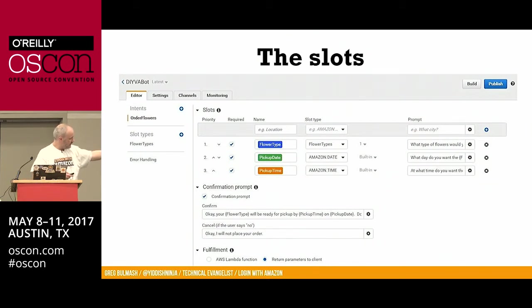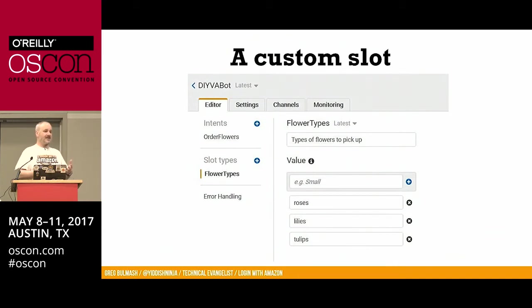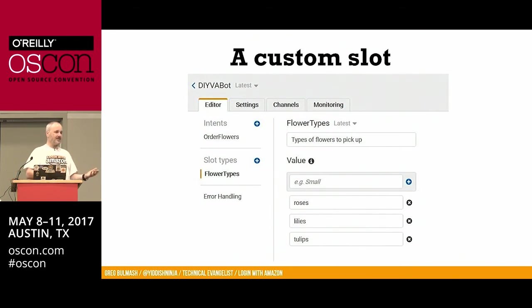Let's look at a slot type — that's the flowers type. Notice that 'daisies' is not included. Lex is an AI, so we're giving Lex cues but we're not necessarily constraining Lex to just these three options. So when I said 'daisies,' Lex understood and was fine with it.